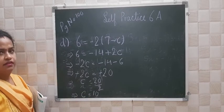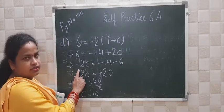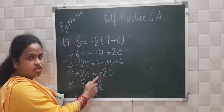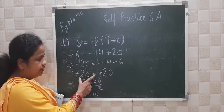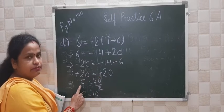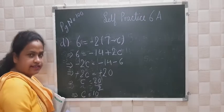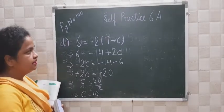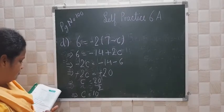So c is equal to 10. Minus 2c, and minus 14 minus 6 equals minus 20. Both left hand and right hand side negatives are cancelled. And c becomes 20 by 2, that means c equals 10. Is there any confusion in this one? It is just like the previous one.